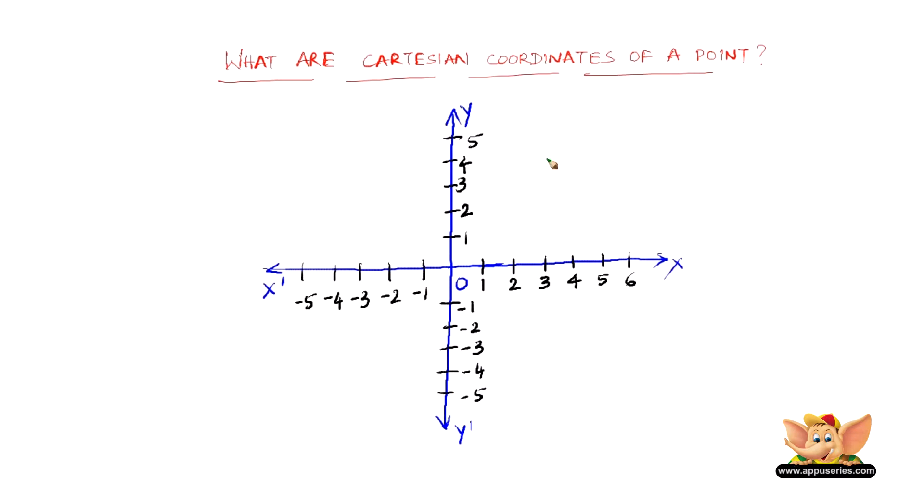Now, let us randomly consider a point, say P. What are the Cartesian coordinates of this point P? Now this is very simple. We just need to measure the horizontal distance of P from the y-axis and then the vertical distance of P from the x-axis.